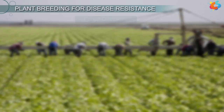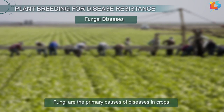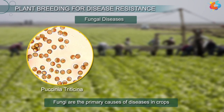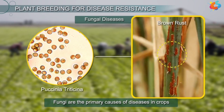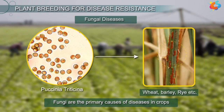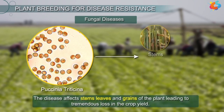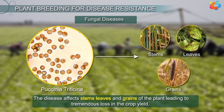First, let us discuss about some fungal diseases. Fungi are the primary cause of disease in crops. A fungus called Puccinia triticina causes a disease called brown rust in cereal crops like wheat, barley, rye, etc. The disease affects stems, leaves and grains of the plant, leading to tremendous loss in the crop yield.